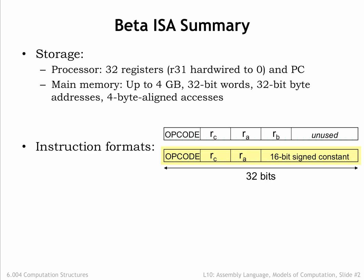Beta instructions are 32-bit values comprised of various fields. The 6-bit opcode field specifies the operation to be performed. The 5-bit RA, RB, and RC fields contain register numbers specifying one of the 32 general-purpose registers.